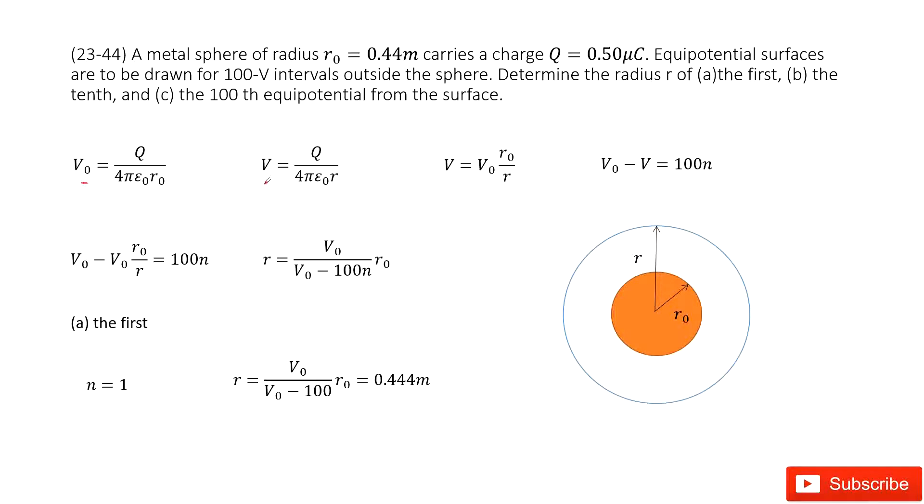Now it tells us the potential difference from this equipotential surface with the surface of this spherical object is at 100 volts intervals. So it is 100 times an integer n. Agree?